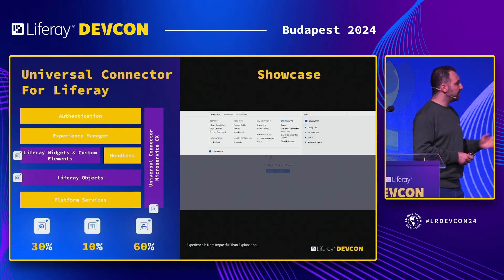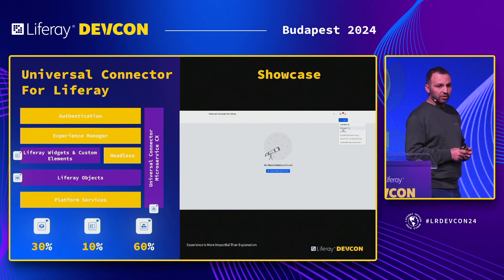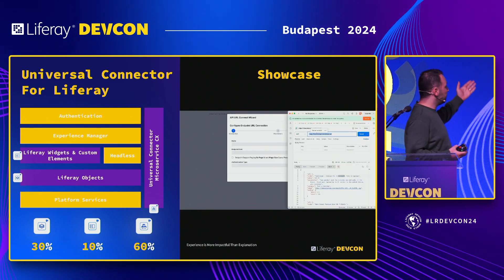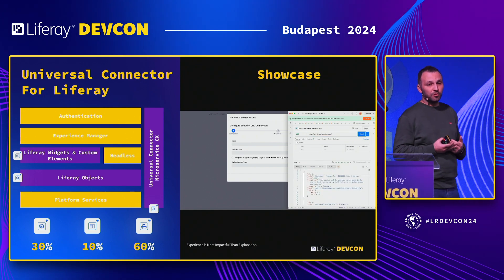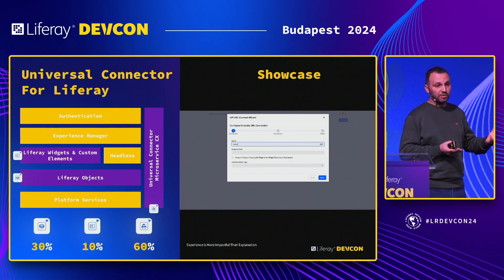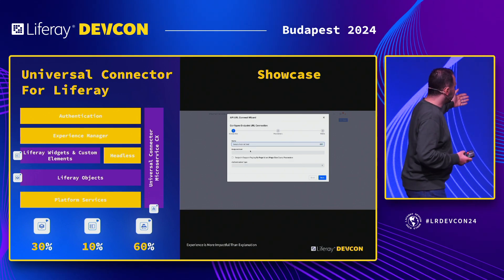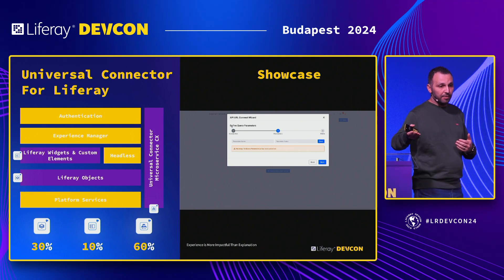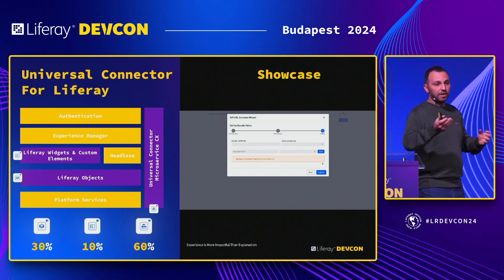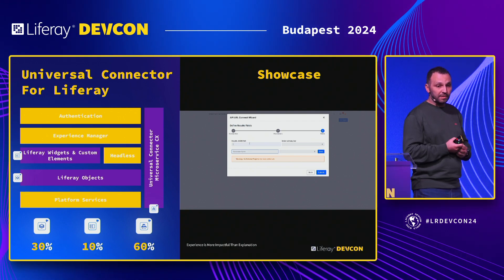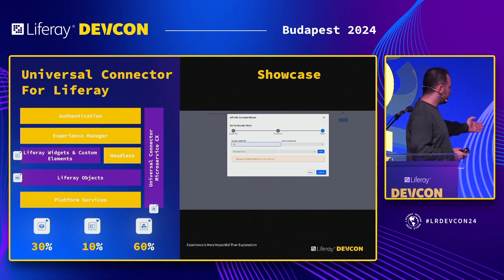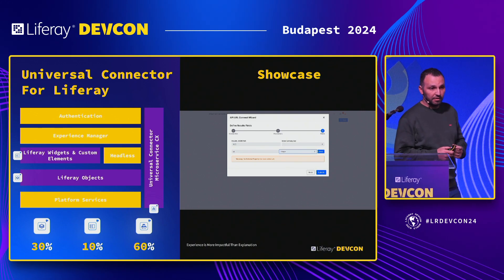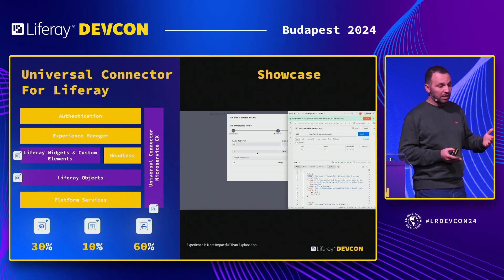The universal connector interface allows you to add a configuration to connect to any external data source. The code I wrote is just my logic to connect to that source — Liferay managed authentication and the experience manager handled integration with Liferay pages. When you create a proxy object, Liferay auto-generates an API you can consume from a React app or mobile app. The breakdown: 30% on batch, 10% UI, and 60% is the back-end connector — and extending it for another connector requires just one additional page of code.